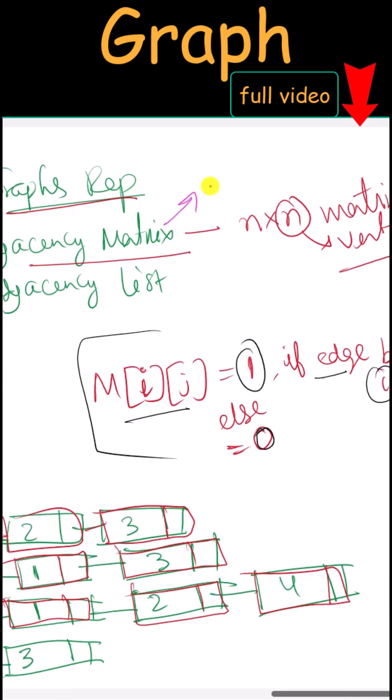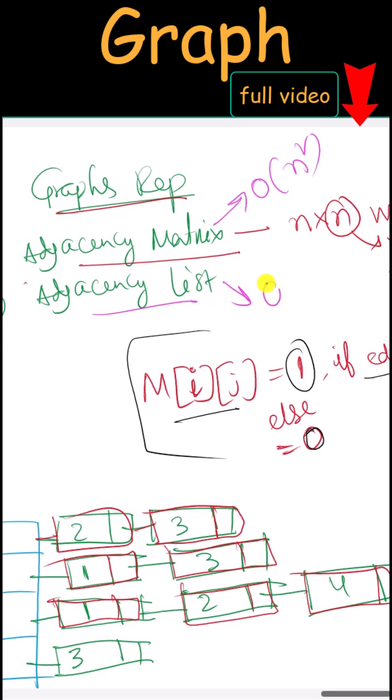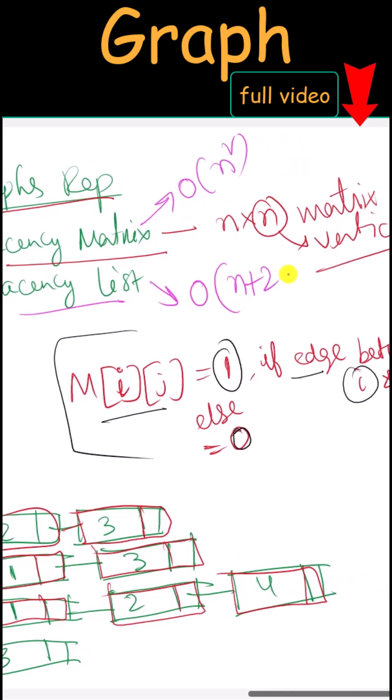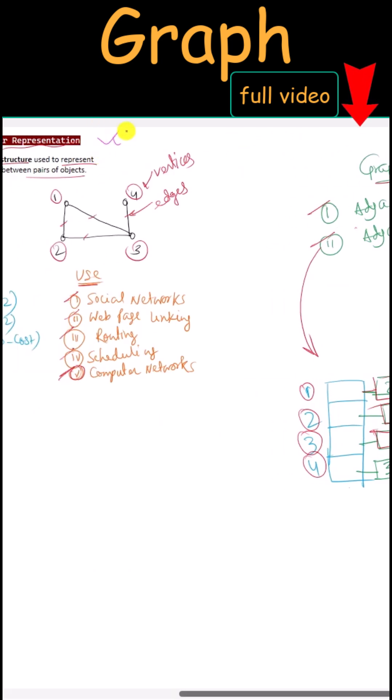For the adjacency matrix, we have a space complexity of order of n squared. For the adjacency list, we have a space complexity of order of n plus 2e. That's it for graphs. Thank you.